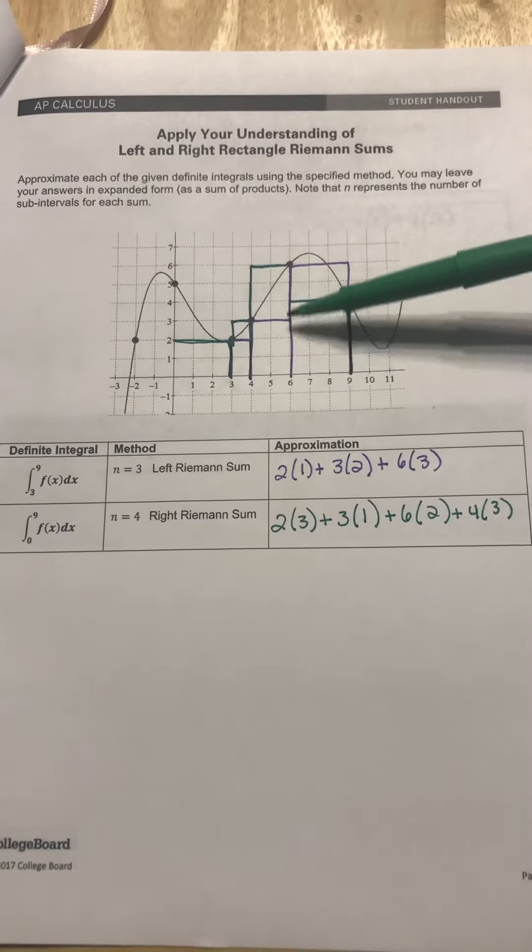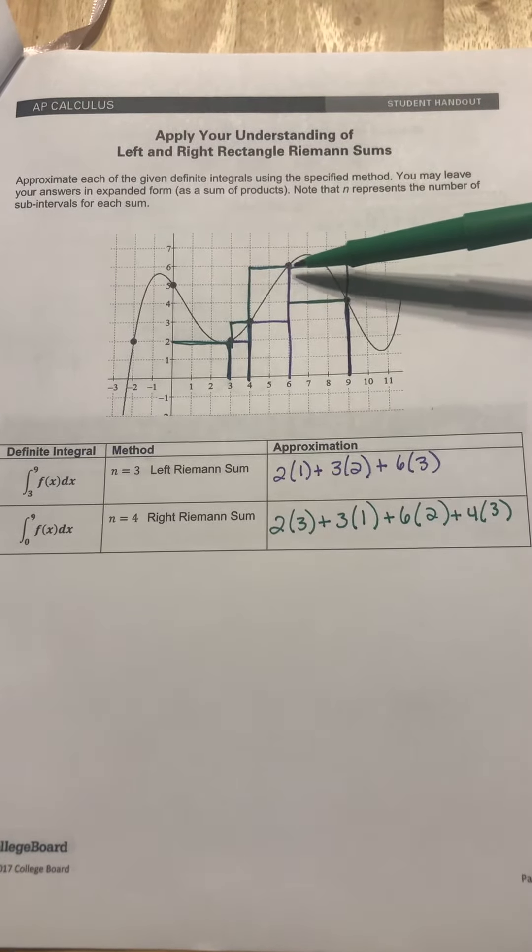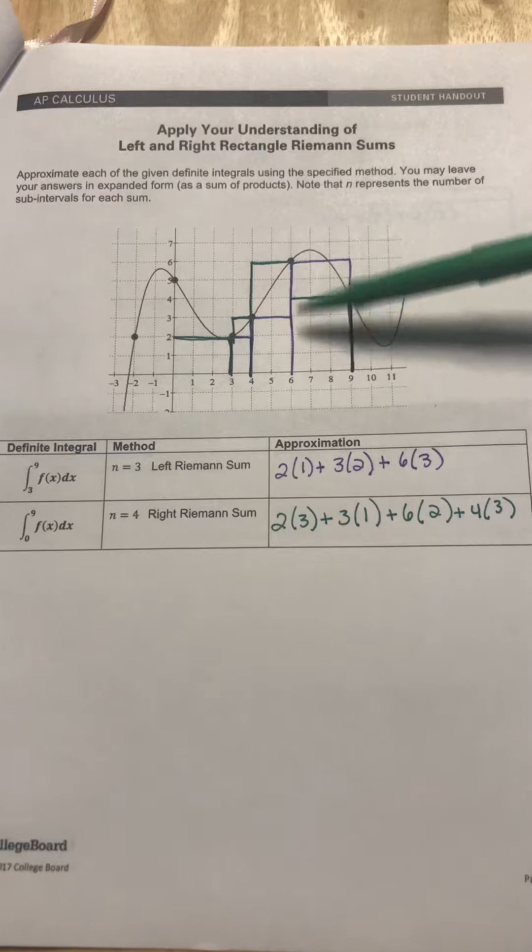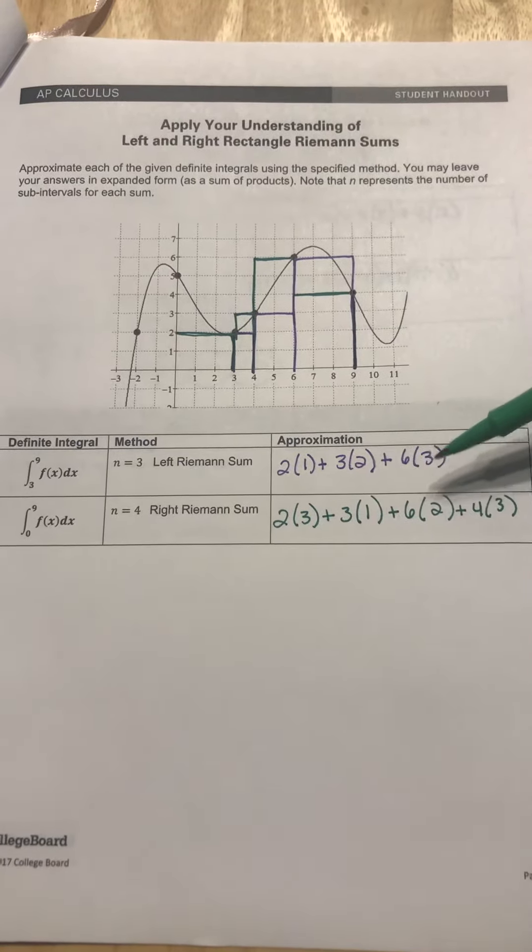So three times two, and then you come up here and you're going from six over to nine. So it's a height of six and three, so six times three.